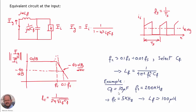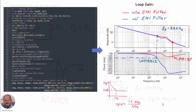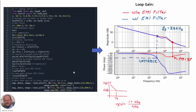We calculated an EMI filter with the following values: for the capacitor, 10 microfarads, and for the inductance, 100 microhenries. We then studied the stability of the converter by plotting the loop gain without and with the EMI filter. In red we have the loop gain magnitude and phase without EMI filter, showing a stable system, but when we add the EMI filter, the system becomes unstable.